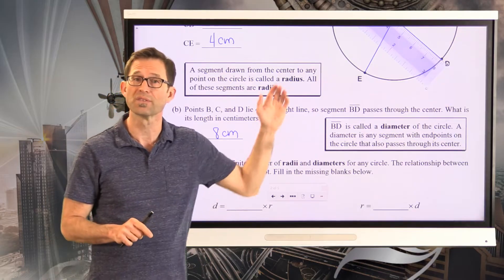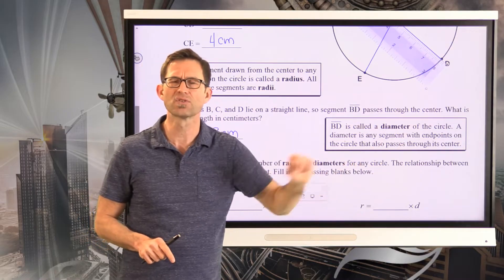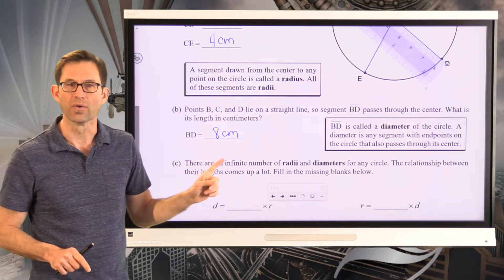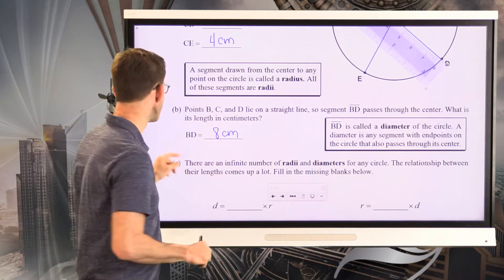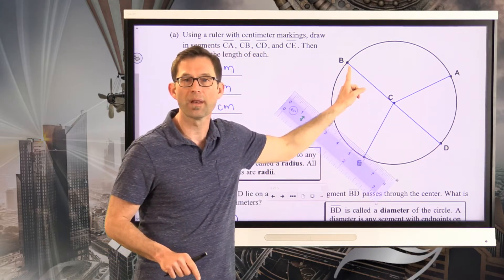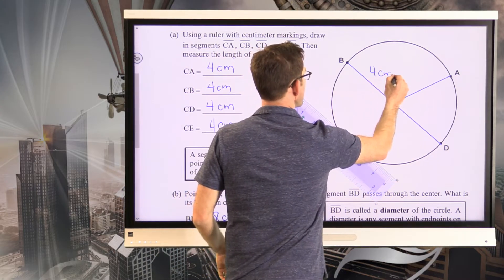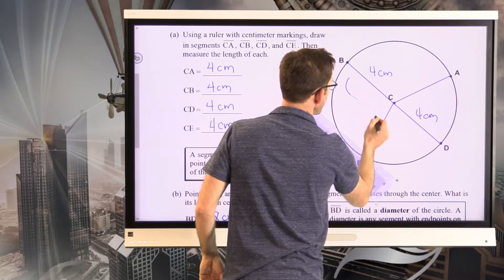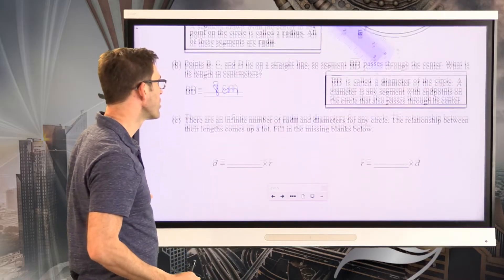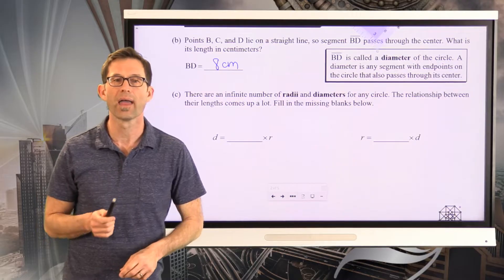A diameter is any segment that has endpoints on the circle and also passes through its center. It shouldn't be a surprise that its length was eight centimeters, given that the radii were four centimeters. If that diameter BD is simply a combination of two radii — this one four centimeters and that one four centimeters — then it makes a lot of sense that it would be eight centimeters. We can write down a relationship between the length of the radius and the length of the diameter in any circle.